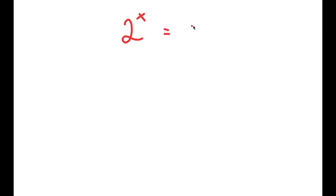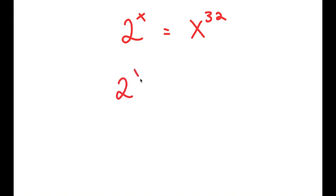In this video, I'm going to solve the equation 2 to the power of x is equal to x to the power of 32. To solve this, I'm going to first start by taking the power of 1 over x on both sides.